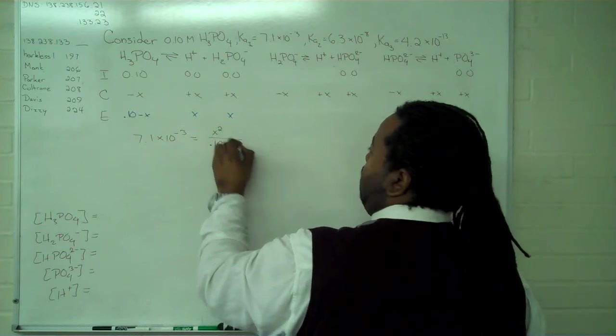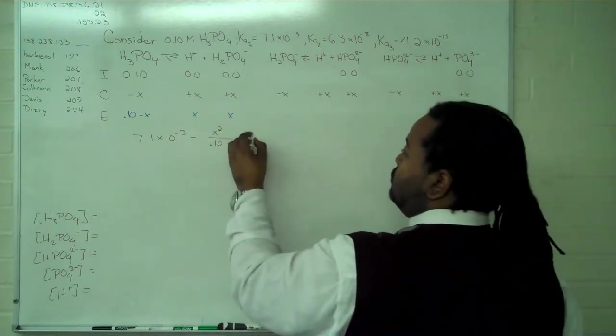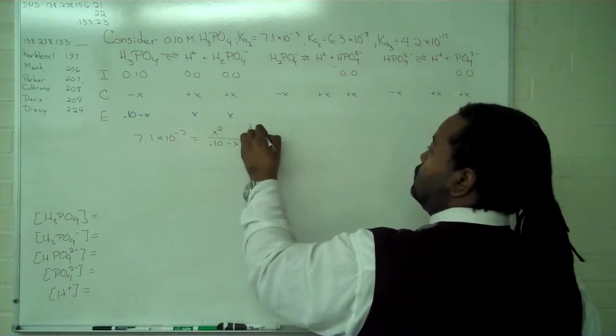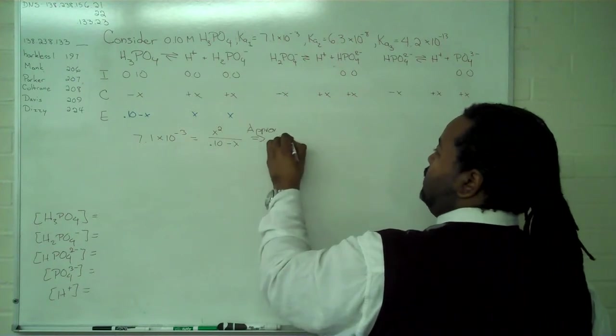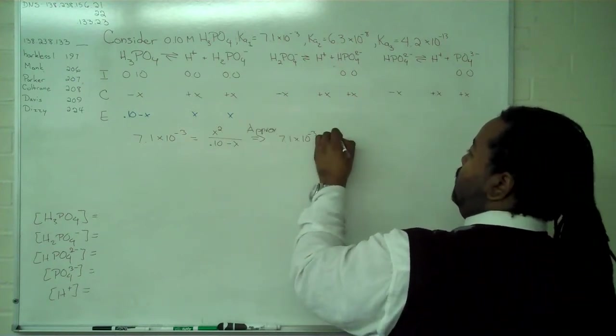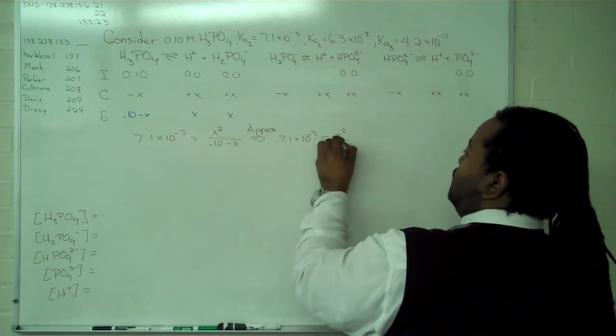divided by 0.1 minus x. If we use the approximation method, we get that 7.1 times 10 to the minus 3 will be approximated by x squared over 0.1, which is 10 to the minus 1.